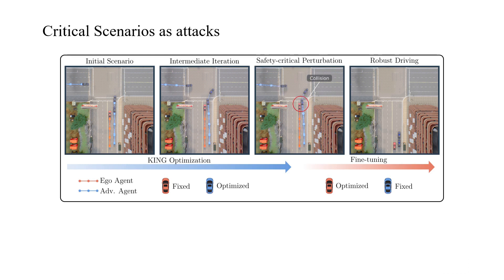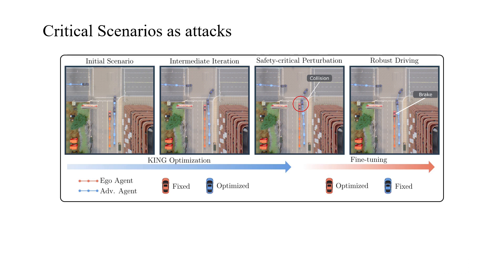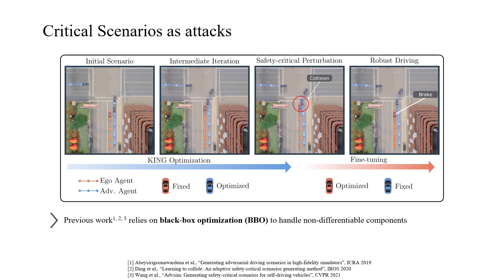These safety-critical perturbations then serve as augmentations to the original training data and can be used to fine-tune driving agents for better collision avoidance. Because driving agents and simulators are not always differentiable, previous work has relied on black-box optimization to solve for safety-critical perturbations. This, however, can be unreliable and is difficult to scale to a large number of parameters.